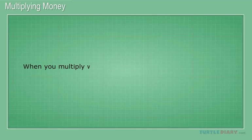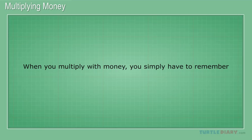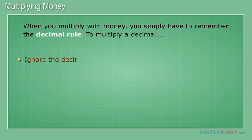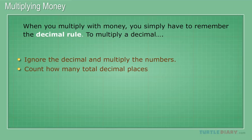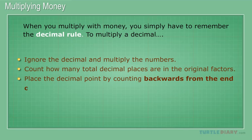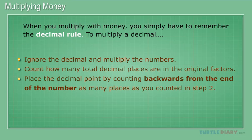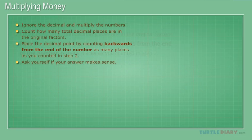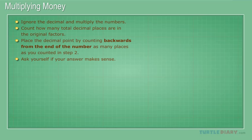When you multiply with money, you simply have to remember the decimal rule. To multiply a decimal: ignore the decimal and multiply the numbers, count how many total decimal places are in the original factors, place the decimal point by counting backwards from the end of the number as many places as you counted in step two, and ask yourself if your answer makes sense.